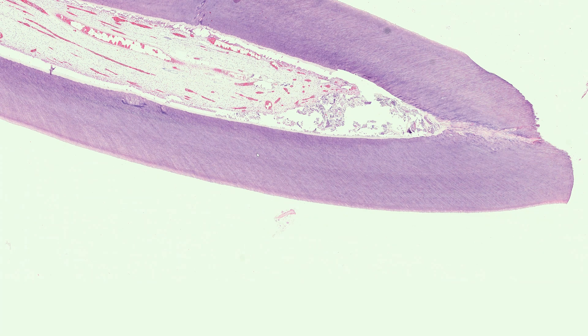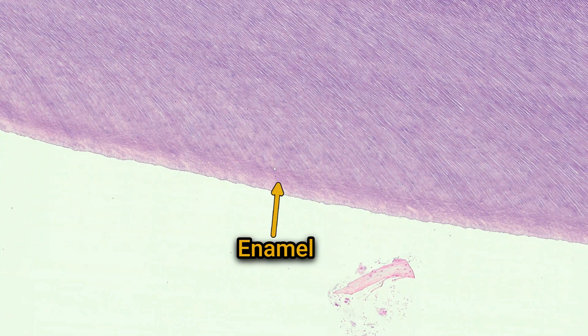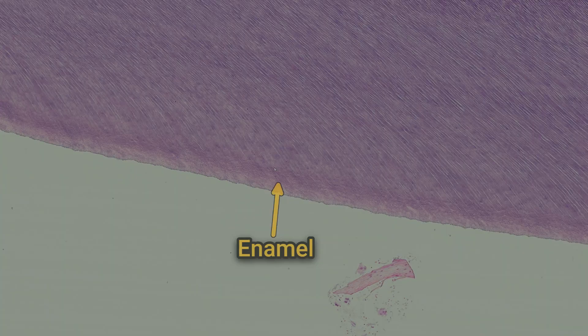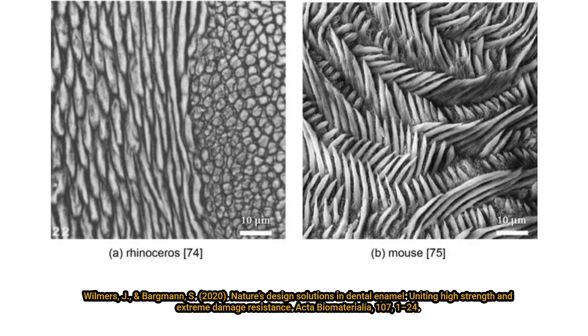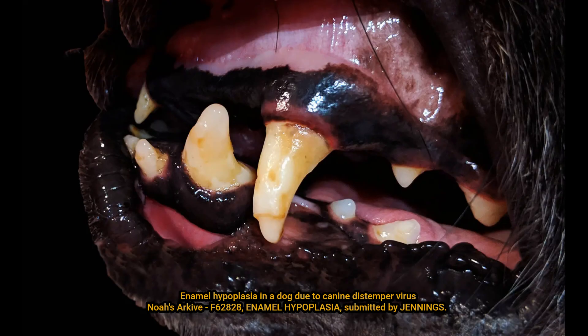Now let's look at the tissues that make up the tooth, starting from the outside in. Covering the crown is a layer of enamel, a translucent substance that is the hardest and most dense tissue in the entire body. It's highly mineralized, made of parallel enamel rods or prisms. Because it's so mineralized, it's completely acellular, meaning it contains no living cells. This is why if you chip your enamel, your body can't grow it back.